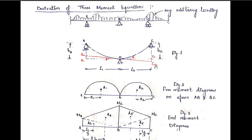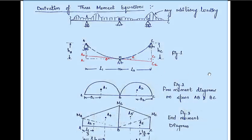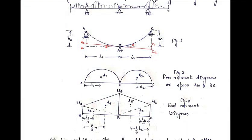In the previous video, we used a consistency condition: the slope of point B with respect to the left support (A) is equal to the slope of point B with respect to the right support. So if one angle is theta, the other is also theta. By geometry, since these two angles are vertically opposite, this angle will also be theta.